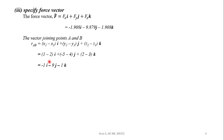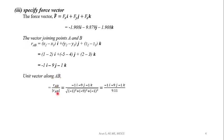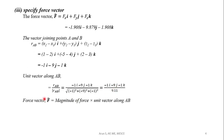The unit vector along line AB is given by the RAB vector divided by the modulus of RAB vector. That is minus 1i minus 9j minus 1k divided by the root of minus 1 squared plus minus 9 squared plus minus 1 squared. To find the force vector, we multiply the magnitude of force by the unit vector along AB. That is 10 into minus 1i minus 9j minus 1k divided by 9.11, giving the force vector as minus 1.098i minus 9.879j minus 1.098k.